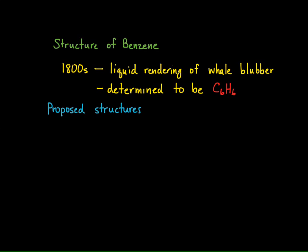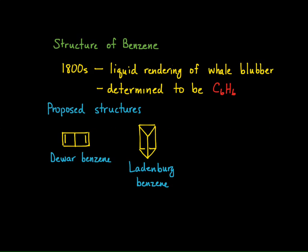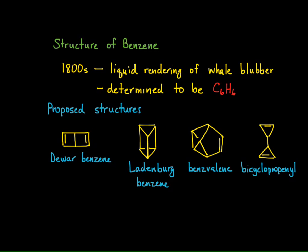Once the molecular formula was determined, the question became: what does the structure look like? Many different structures were proposed. This particular structure is called Dewar benzene. We have this particular structure called Leidenberg benzene — it looks almost like a crystalline material. We have odd structures like this one that is called benzvalene. And the last example is bicyclopropenyl. All of these structures have the same molecular formula — they are constitutional isomers of C6H6.